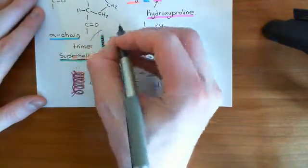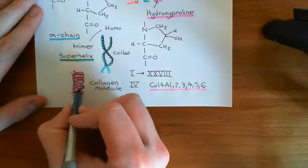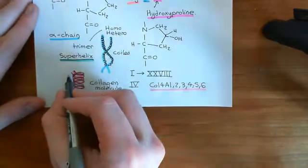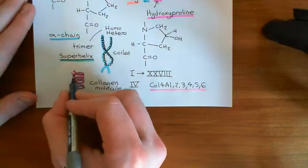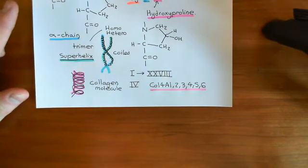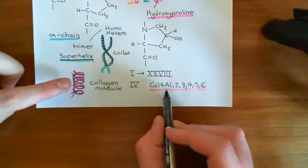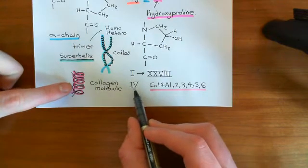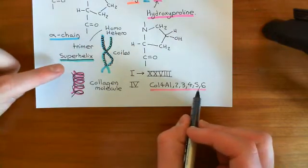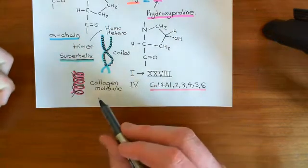You can either form homotrimers, where you combine three identical alpha chains together, or you can form heterotrimers, where you combine three different alpha chains together to make the superhelix. If you are collagen type 4, it means that the alpha chains used to make your collagen molecule belong to this collection of six alpha chains.